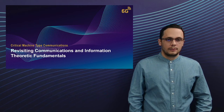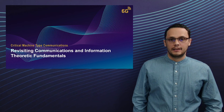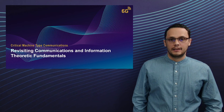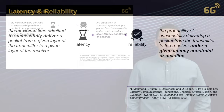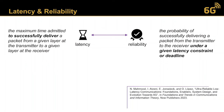Let's revise some communication and information theoretical aspects regarding critical machine type communications. Latency and reliability are inherently tied by definition. Latency is basically the maximum time admitted to successfully deliver a packet from a given layer at the transmitter to a given layer at the receiver. Reliability is the probability of successfully delivering a packet under a given latency constraint or deadline. The typical critical MTC requirement as defined by 3GPP is that a 32-byte packet is successfully delivered 99.999% of the time under a user plane latency constraint of one millisecond over a point-to-point link.